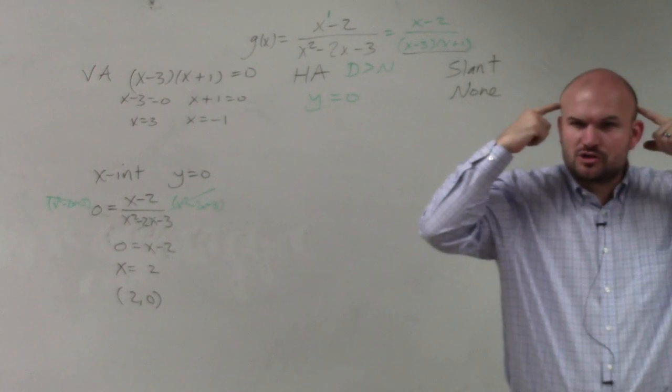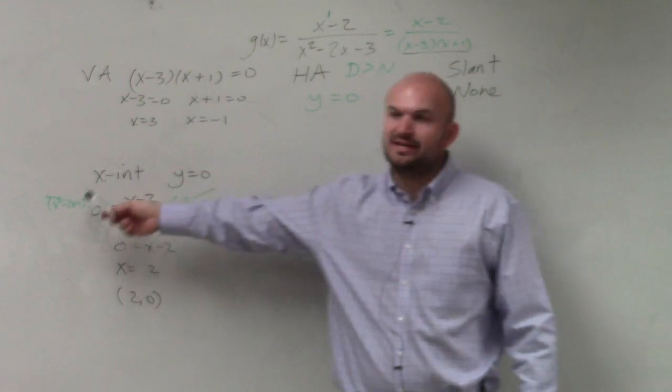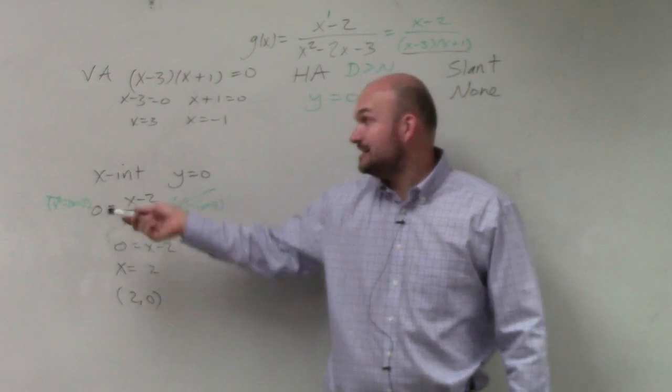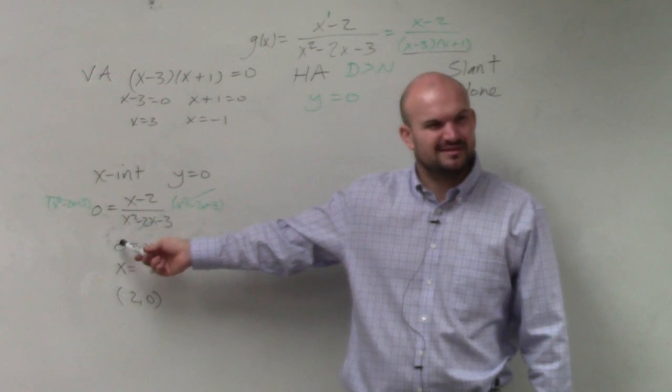The other thing I want to show you is a short trick. Since I had to multiply the denominator, and since it's set equal to 0, do you see when finding the x-intercept, you're really just setting the numerator equal to 0. You see that?